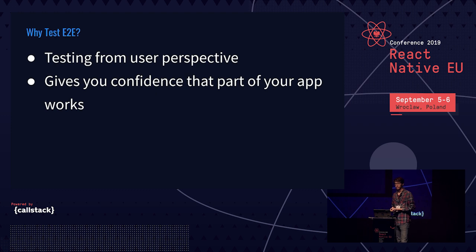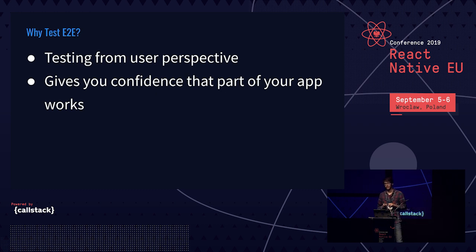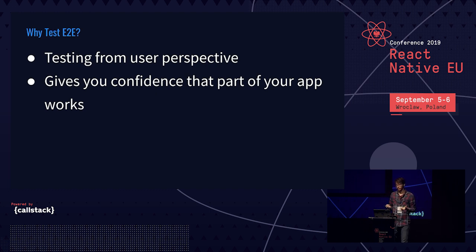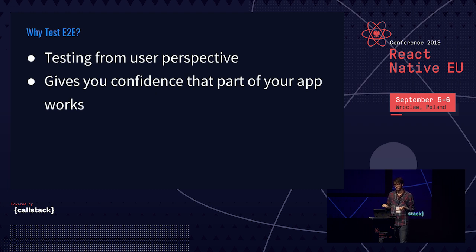What's the motivation for end-to-end testing? In your end-to-end tests, you test your app from the user perspective. If you cover a certain part of your app with end-to-end tests and they pass, this gives you confidence that that part of the app is working. You don't need to write tens or hundreds of those tests — just a few covering the most important parts will give you confidence.